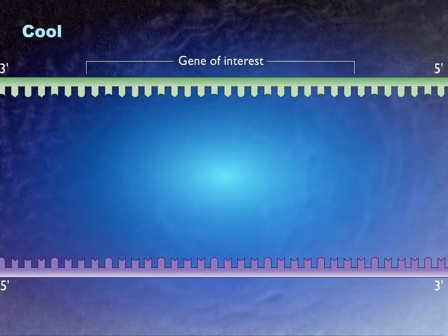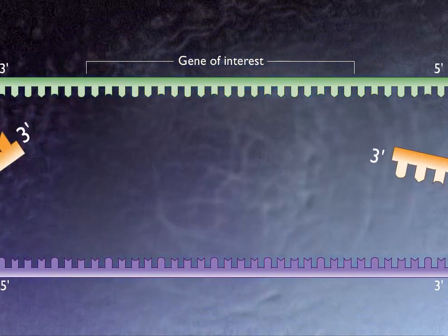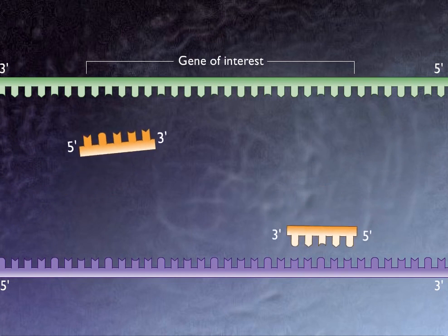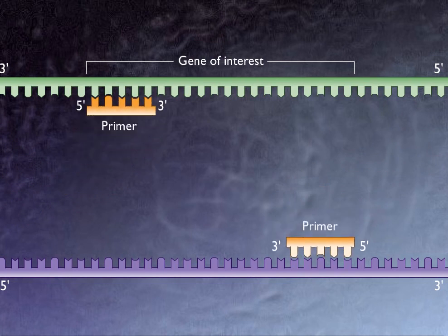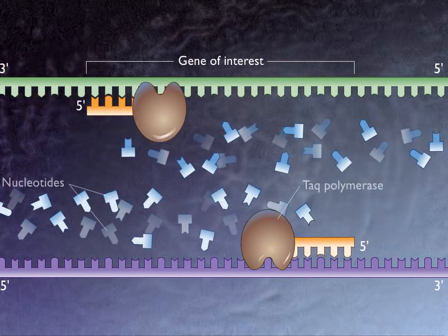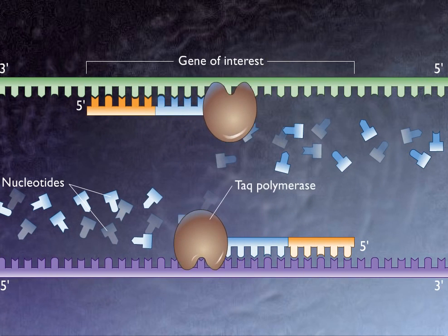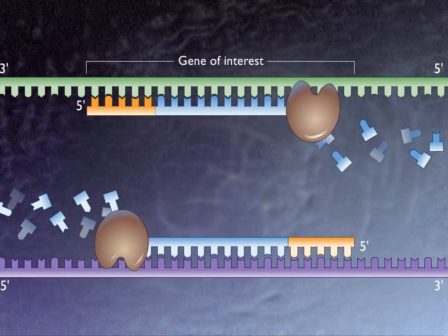The mixture is then cooled sufficiently to allow the DNA primers to anneal to each end of the segment to be copied. Taq polymerase then synthesizes the complementary strand of DNA using the primer as the starting point.